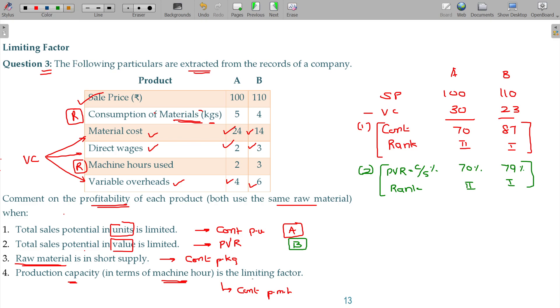When raw material is in short supply, third, we calculate contribution per kg of raw material. Product A uses 5 kg to earn 70 rupees, so per kg it's 14. Product B earns 87 for 4 kg, so per kg it's 21.75. So from this it's very clear.